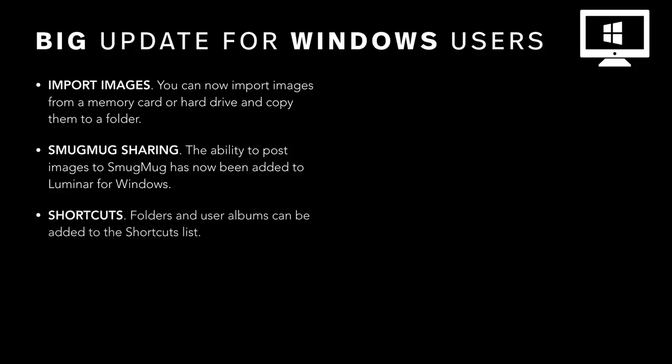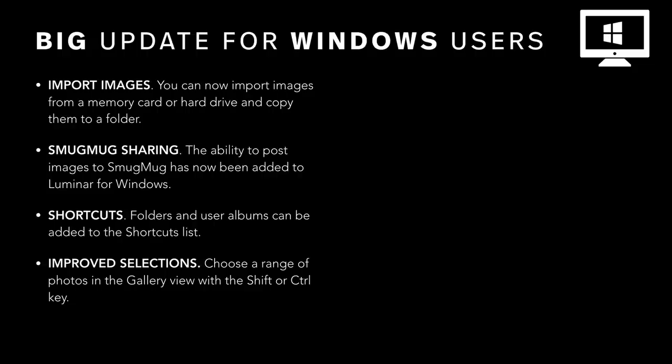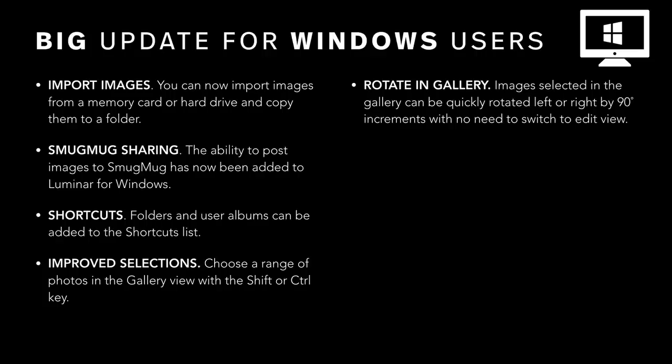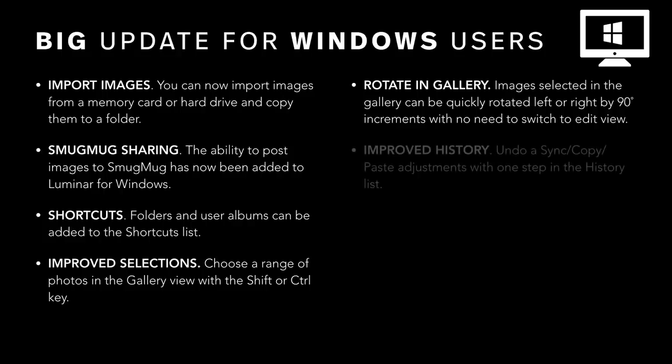You can also customize the shortcuts area to add your favorite albums and folders for quick access. If you need to make a complex selection inside the gallery, you can choose a range of images by holding down the Shift key, or select individual images by clicking with the Control key. This makes it easy to grab all the photos you want for a batch export or to put them in a custom album. Right in the gallery, you can now rotate images — just use a right-click or choose the image command and you can quickly rotate in 90-degree increments.